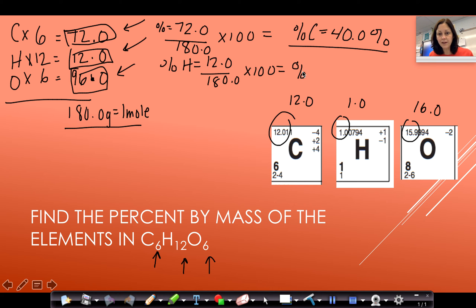And if I want to do my percent of oxygen, I do the number 96.0 over 180.0 times 100, because that was the part of my oxygen. And I get that my percent of oxygen equals 53.3%. And if you notice, 40 plus 6.67 plus 53.3 equals 100%. And those would be my mass percents of carbon, hydrogen, and oxygen in this compound in C6H12O6.